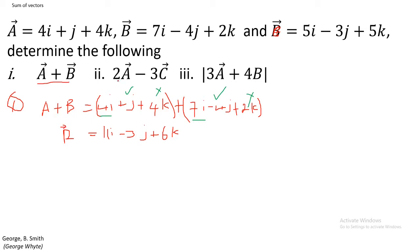For the second question, we need to find 2A minus 3C. Think of it as finding the resultant of the vector 2A and the vector minus 3C. When you subtract vectors, you are adding one to the negative of the other — so you're looking at the resultant of 2A and minus 3C, which is the same as 2A minus 3C.